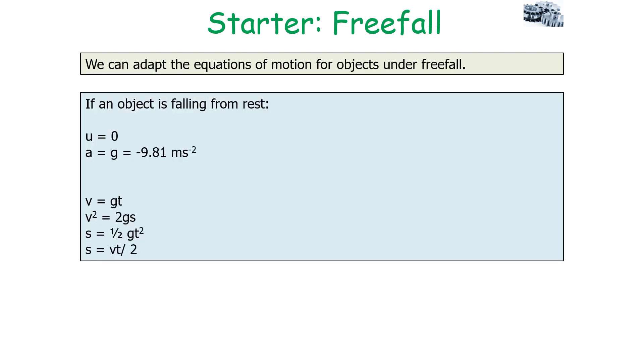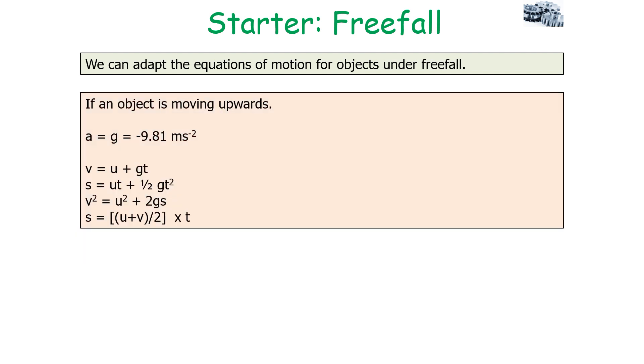If an object has fallen from rest, u will equal zero and a will equal g, which is -9.81. So our equations of motion will now be adapted to be: v = gt, v² = 2gs, s = ½gt², and s = vt/2. If an object's moving upwards, we can say a = g = -9.81 m/s². So now we can say v = u + gt, s = ut + ½gt², v² = u² + 2gs, and s = (u + v)/2 × t.